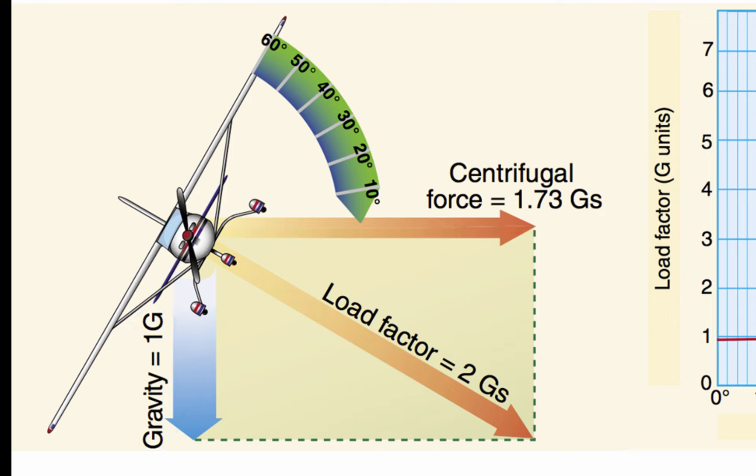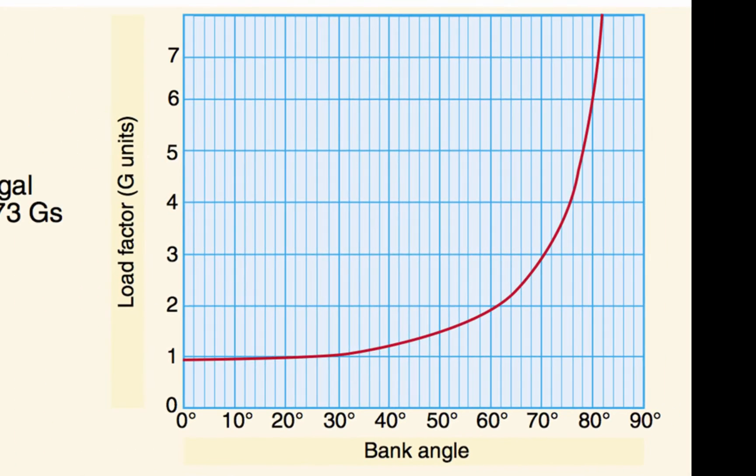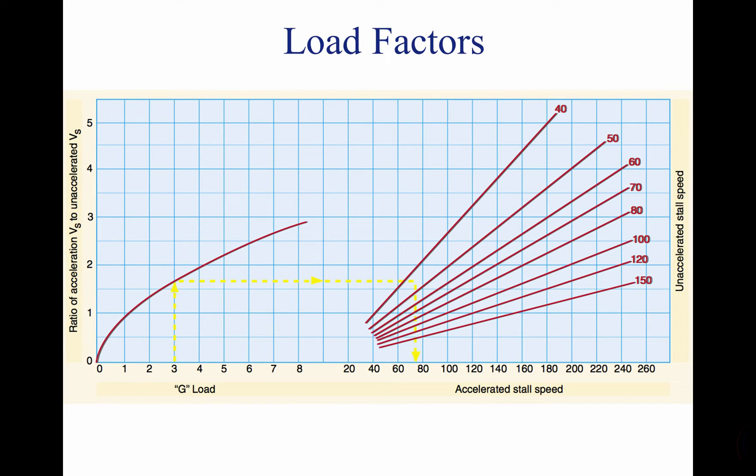To maintain altitude during a turn, the aircraft must sustain the loads shown at the chart on the right. The maximum bank for the average general aviation aircraft is 60 degrees. When an aircraft experiences a load, as in a turn, the speed at which the aircraft stalls increases.